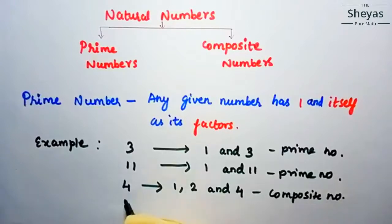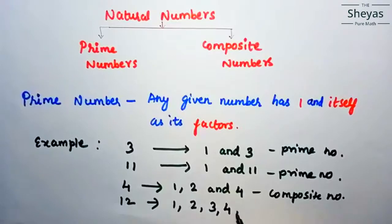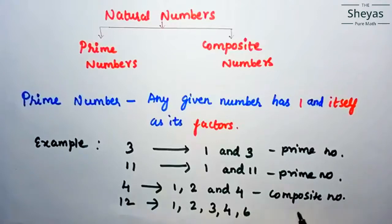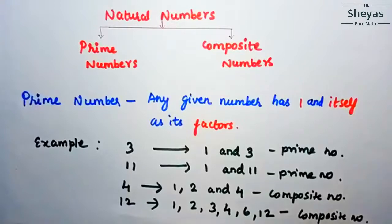Now just see the example of 12. It has factors 1, 2, 3, 4 — because 2 times 6 are 12, so 2 and 6 are factors; 3 times 4 are 12, so 3 and 4 are factors; and 1 and 12 are factors. So this is a composite number, which has more than 2 factors.